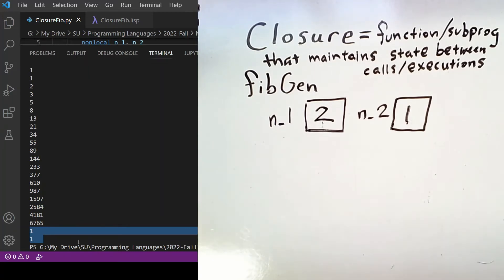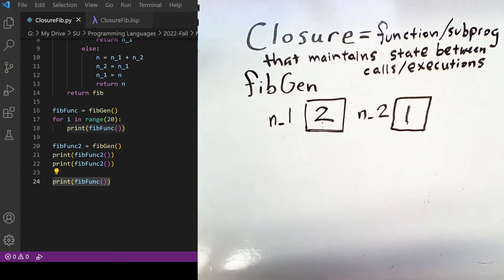So we can see that after printing several values in the Fibonacci sequence using fibfunc, we then print the first two values using fibfunc2 and we have indeed reset the sequence.